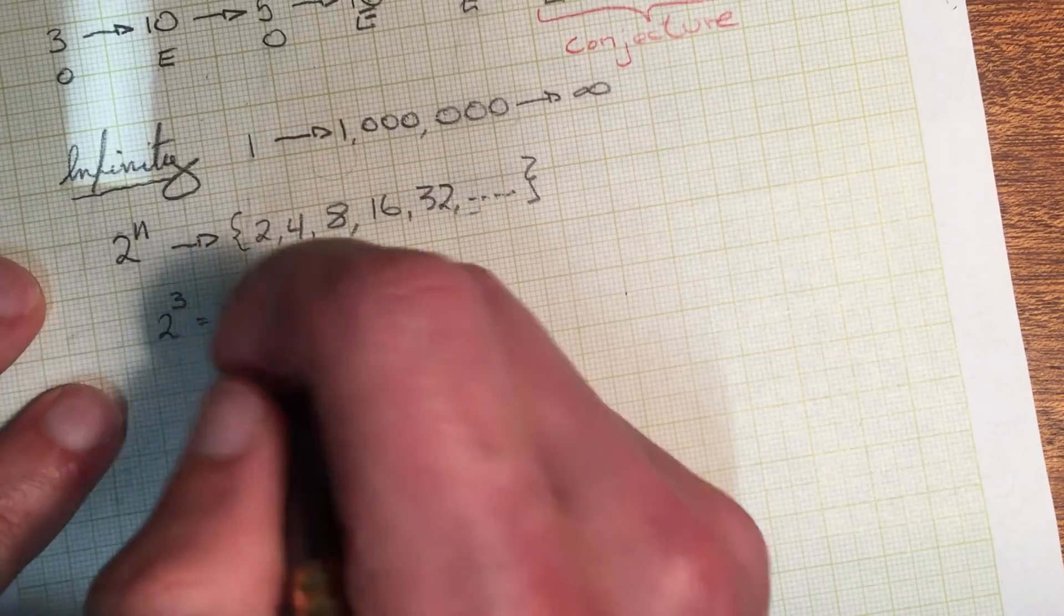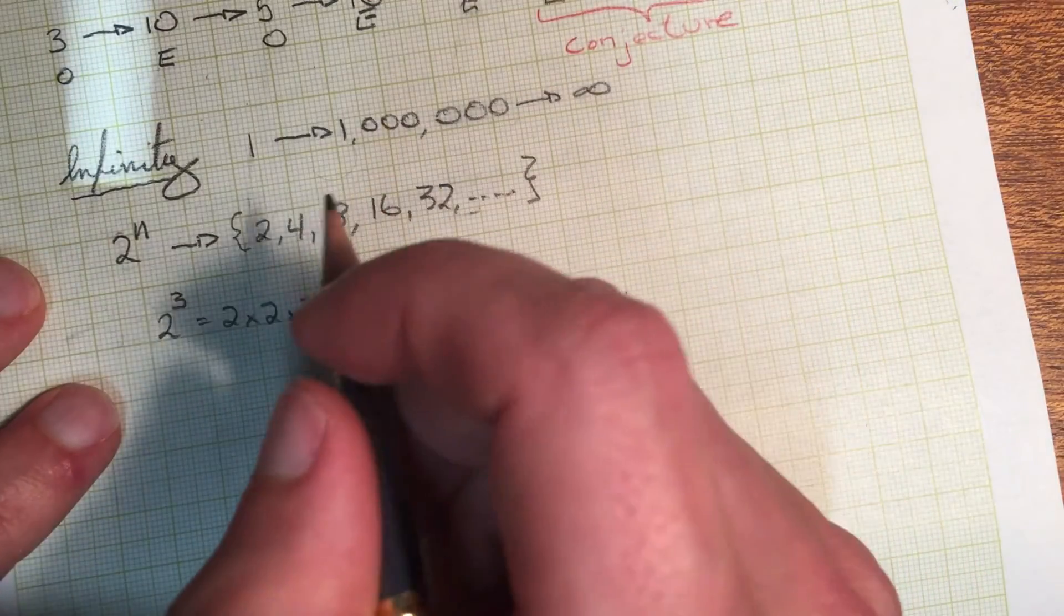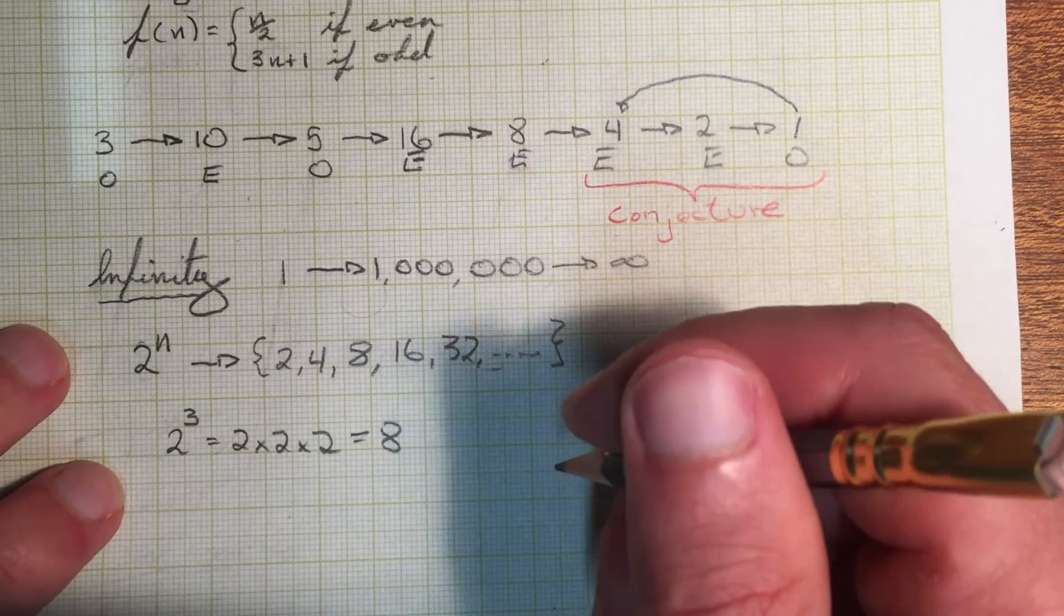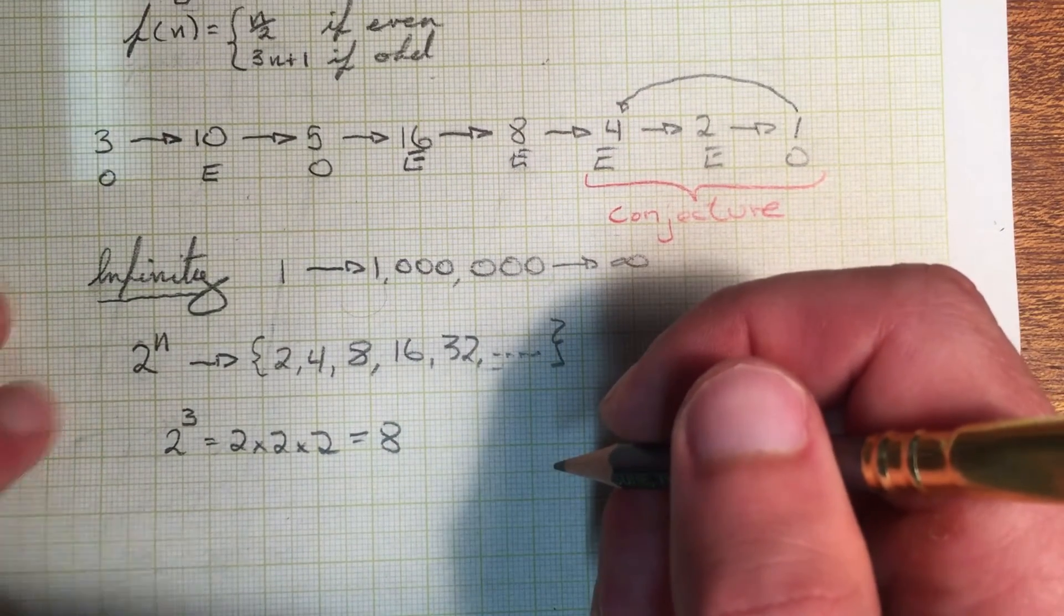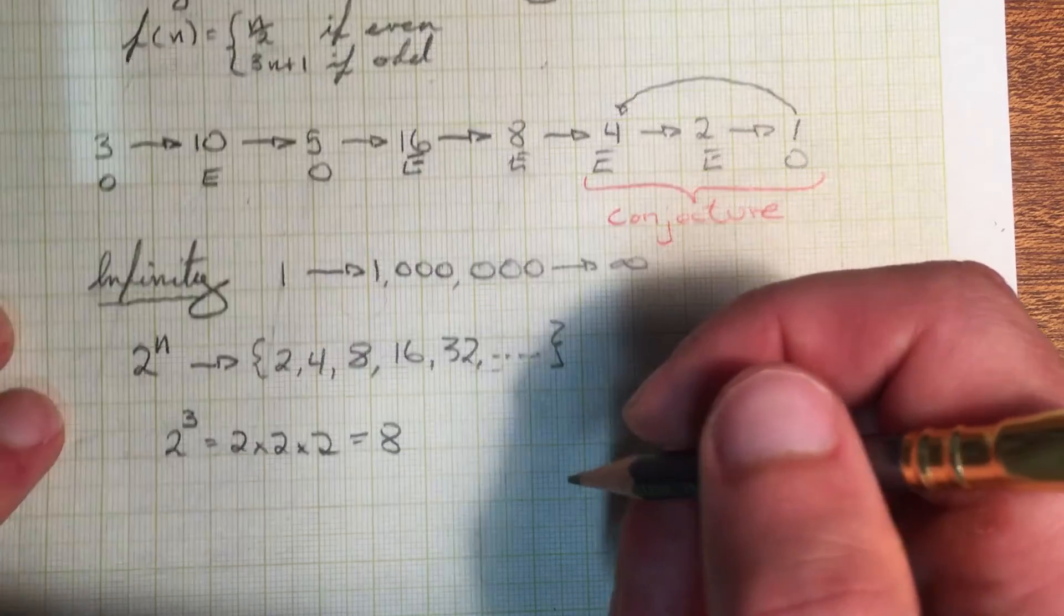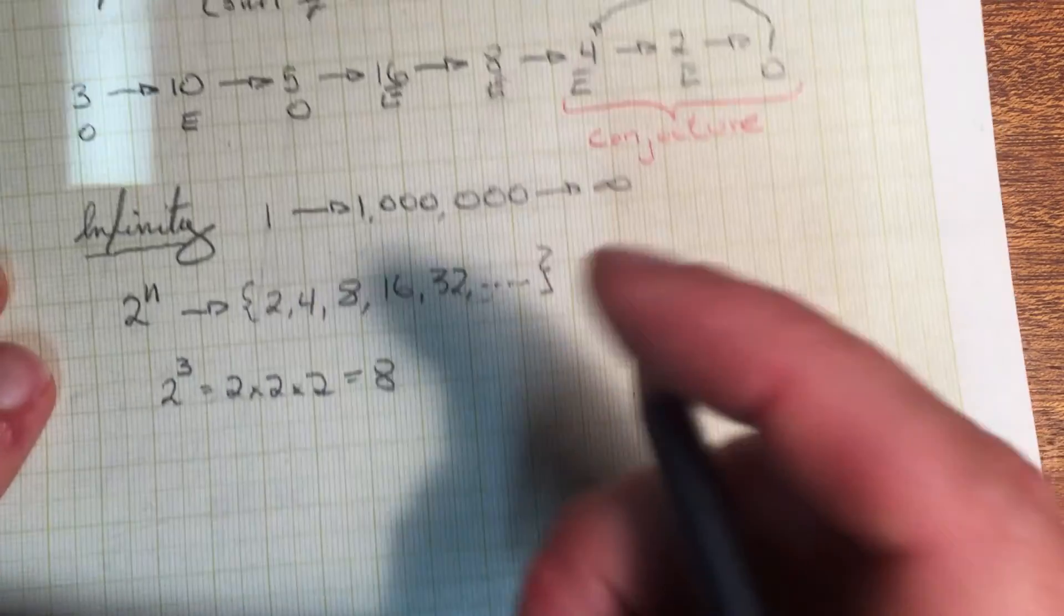...you can see how any string like two times two times two times two going on forever, if you're just going to go and do the inverse of it, which is divided by n over two, eventually, you'll always get back to four, two, one. So I could have two to the billion, and all I'm going to do is a billion steps of n over two. So that's a pretty trivial example.